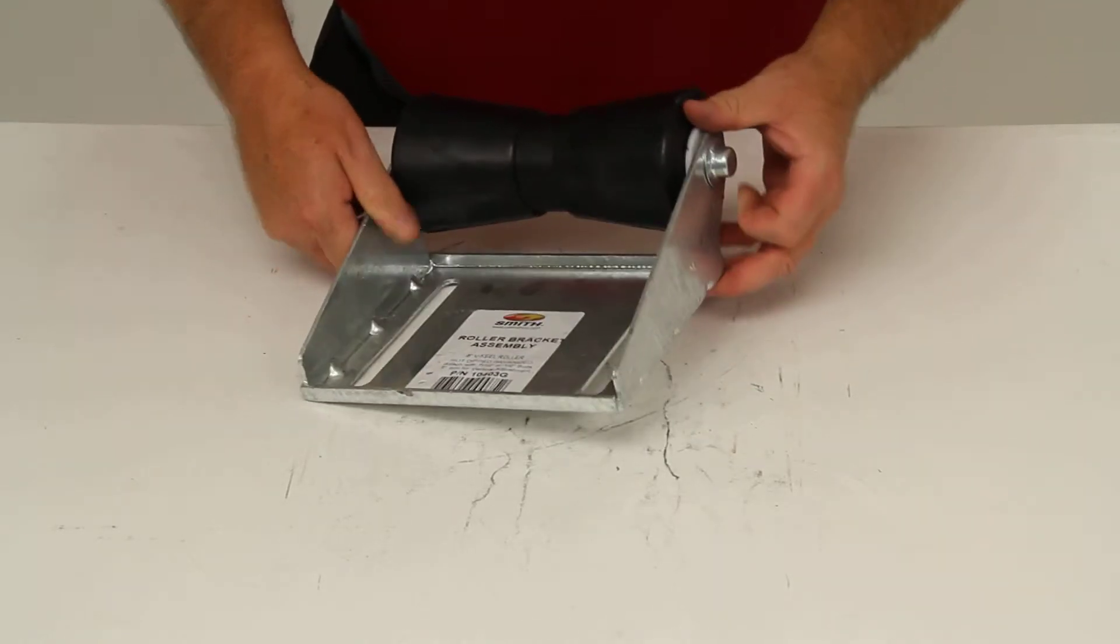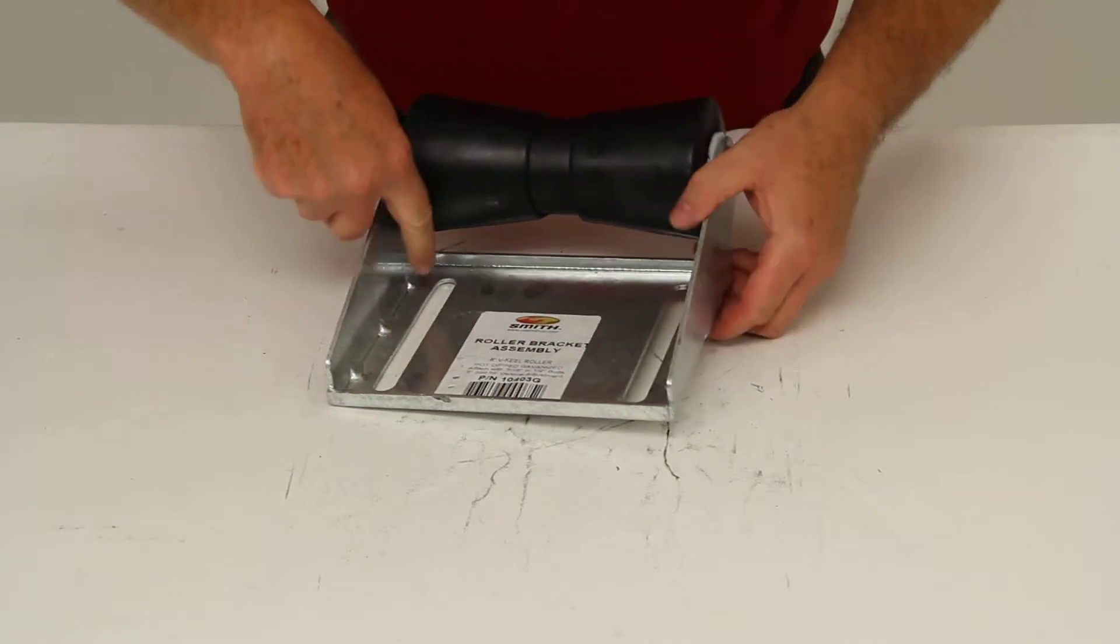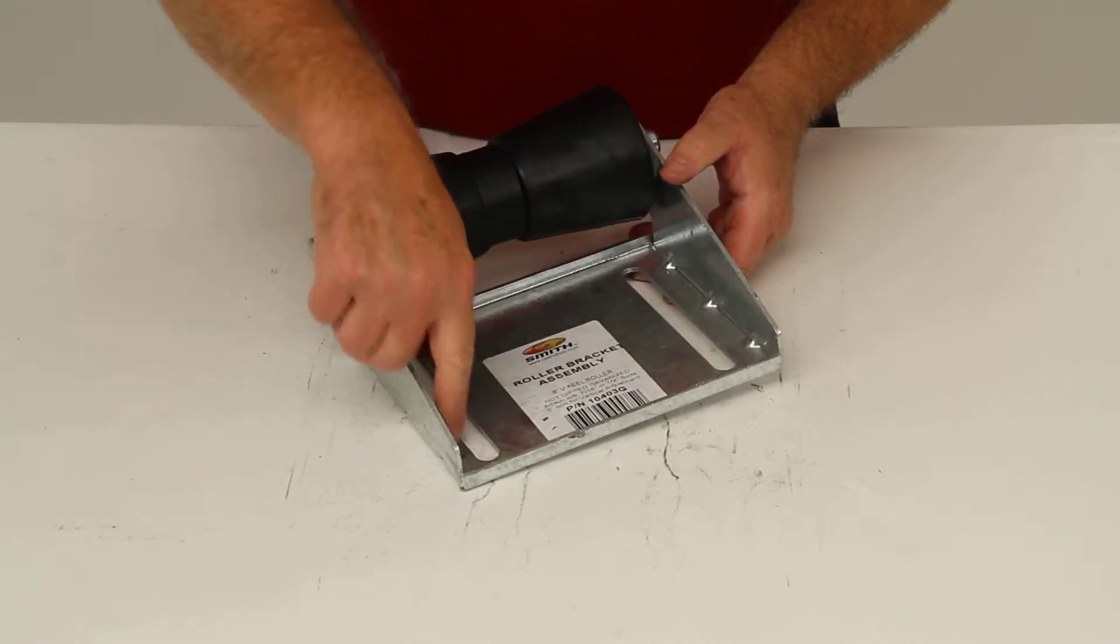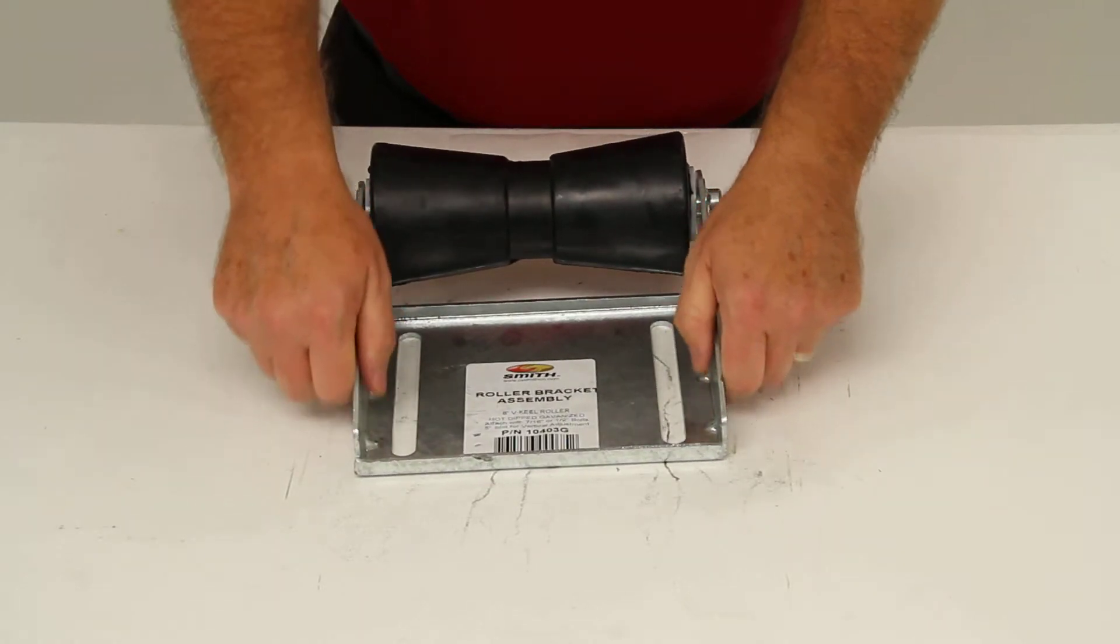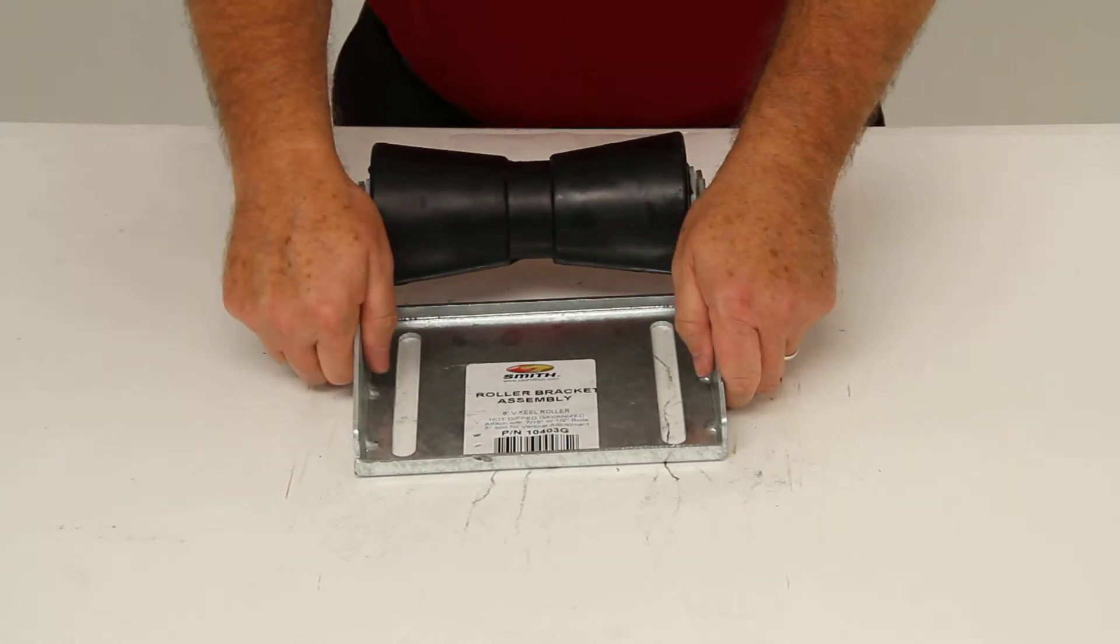There are also six gussets, three on each side here. And they are put in to give support and extra strength to stiffen the side bends of the mounting bracket.